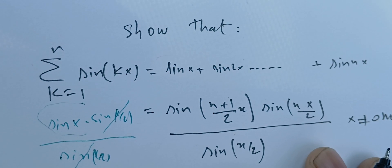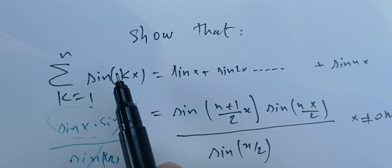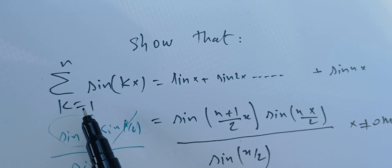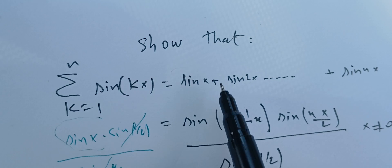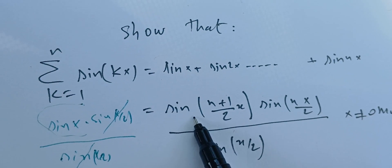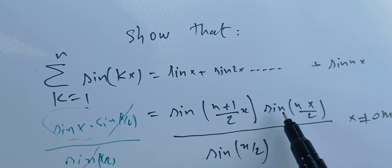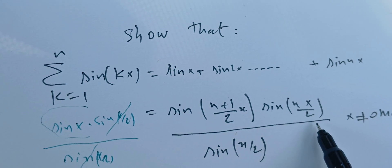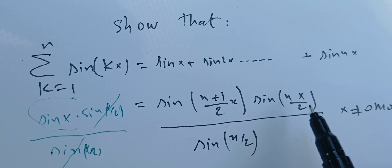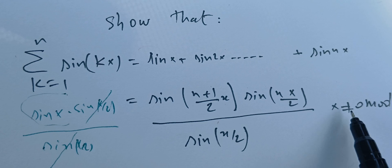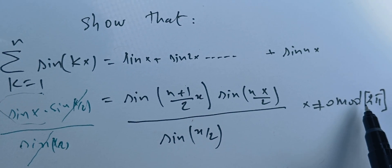In this video we're going to prove that the sum of the sine of kx, k going from 1 to n, is equal to the sine of (n+1)/2 times x times sine of nx/2, everything over sine of x/2. Here we assume that x is different from 0 modulo 2π.